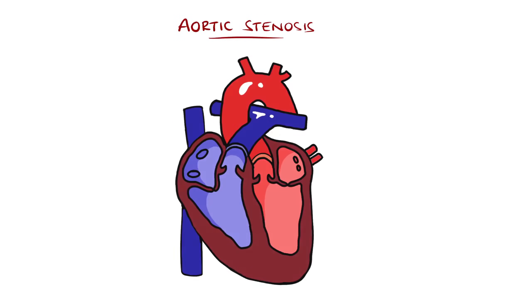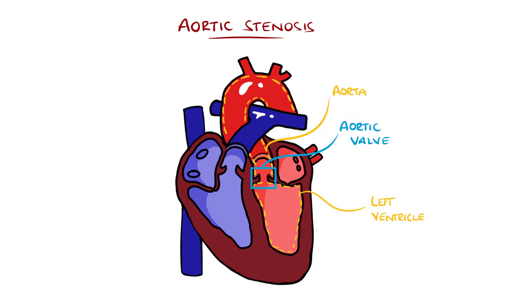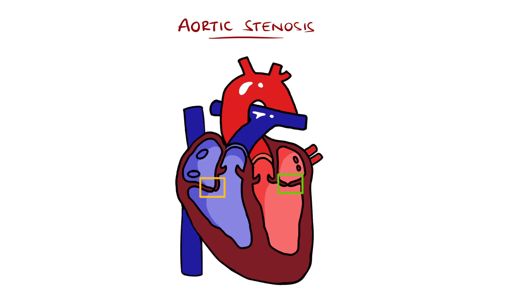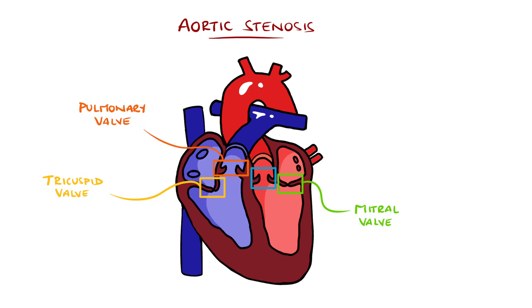Aortic stenosis is a narrowing of the aortic valve of the heart, causing an obstruction to blood flow between the left ventricle and the aorta. There are four valves in the heart: the mitral valve and tricuspid valves, which lie between the atrium and ventricle on the left and right side respectively, and the aortic and pulmonary valves. The pulmonary lies between the right ventricle and pulmonary artery, and the aortic valve between the left ventricle and aorta.